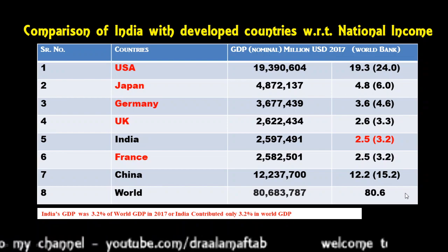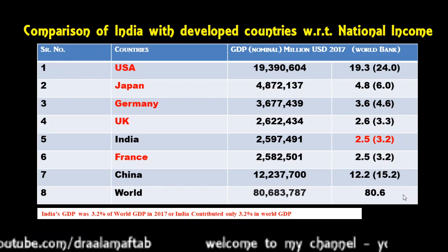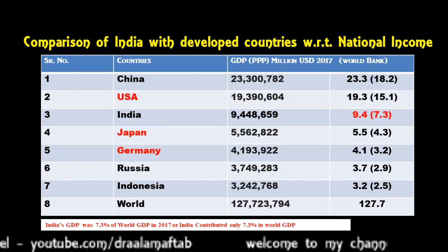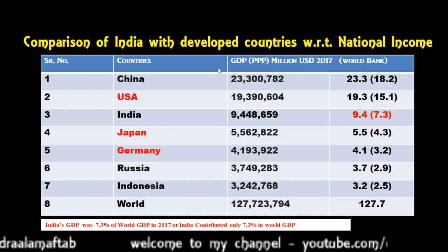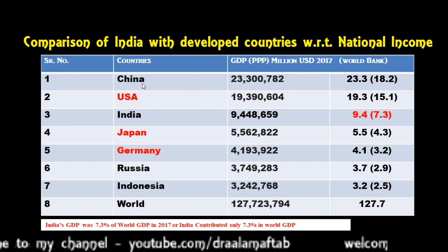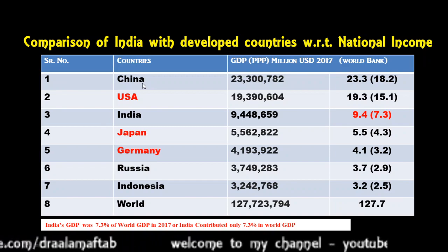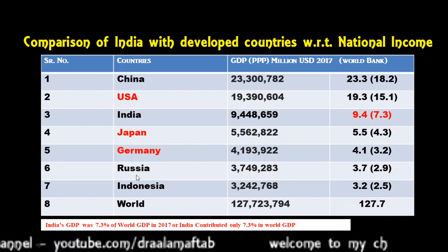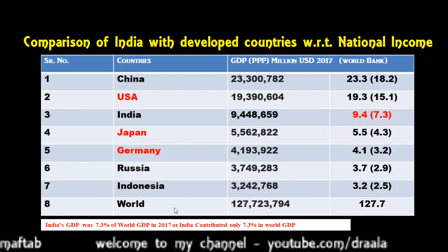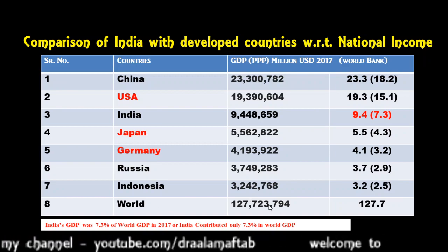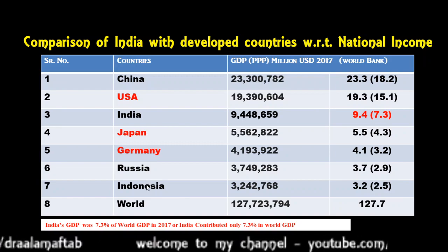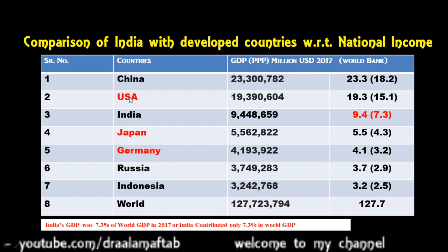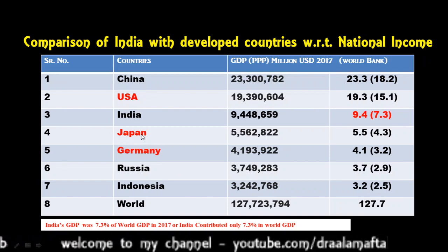But if you compare in purchasing power parity term, the status is different. You can see now in this slide: China is at the top first position, then USA, then India, Japan, Germany, then Russia, Indonesia, and the world GDP in PPP term. China and Indonesia are developing economies, whereas the countries in red color are developed economies.